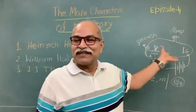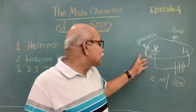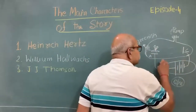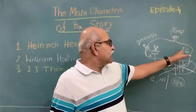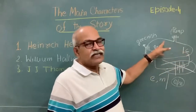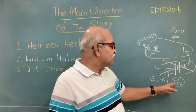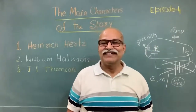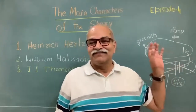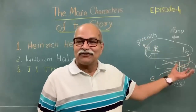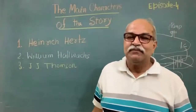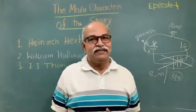Thomson performed a separate experiment where he shone ultraviolet light on a cathode without applying any voltage, and found that cathode rays were emitted with the same e/m ratio. This is how he confirmed the photoelectric effect — that by shining UV light on a cathode, electrons are ejected from it.